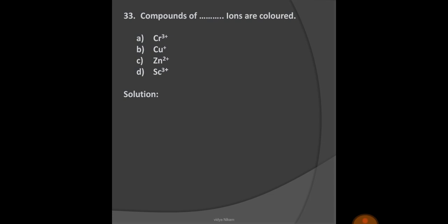Next question: Compounds of which ion are colored? Options: A) Cr3+, B) Cu+, C) Zn2+, D) Sc3+. Let us see electronic configuration. Chromium 3+ is 3d3 4s0, Copper + is 3d10 4s0, Zn2+ is 3d10 4s0, and Scandium 3+ is 3d0 4s0. So here, only Chromium 3+ ion contains unpaired electrons in 3d orbital, so it produces colored ions. Option A is the right option.